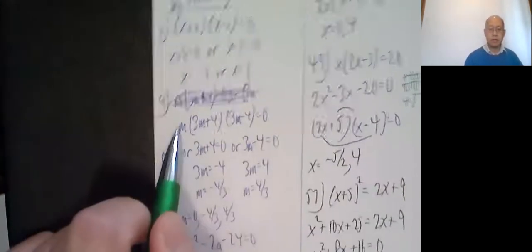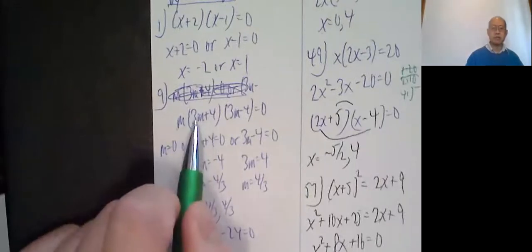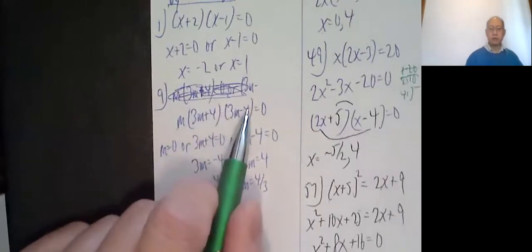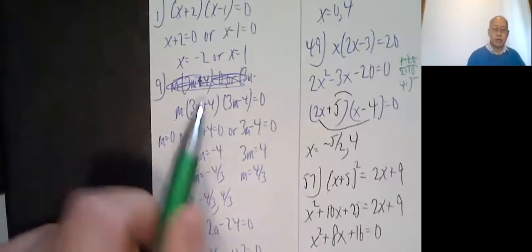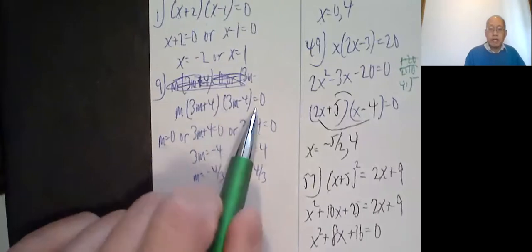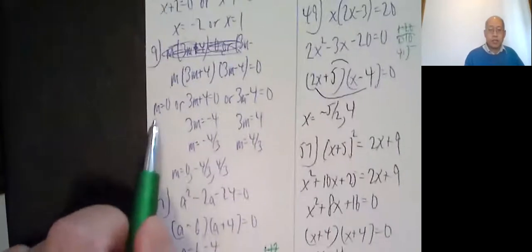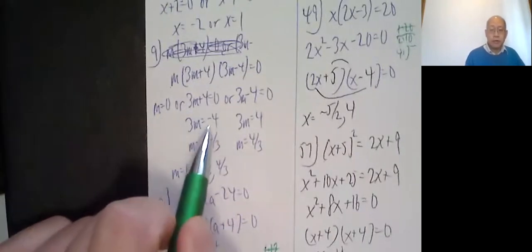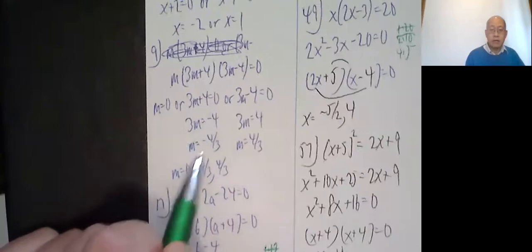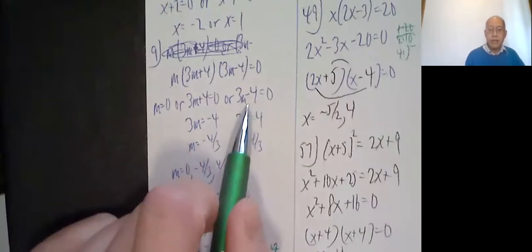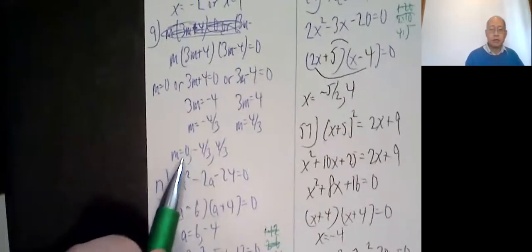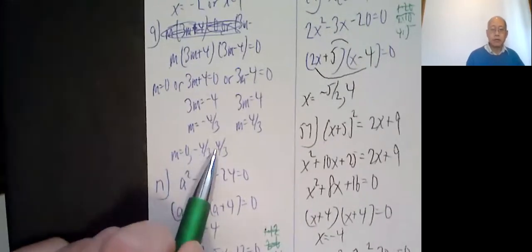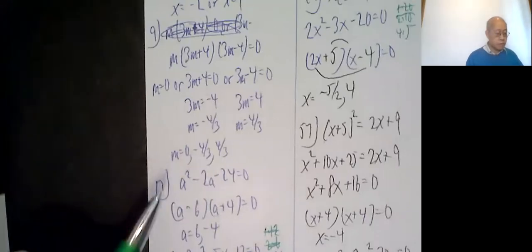Number nine: m times 3m plus four times 3m minus four equals zero. So that means either m is zero, which is finished, or 3m plus four equals zero, or 3m minus four equals zero. This one subtract four, divide three, m equals negative four thirds. Add four, divide three, m equals four thirds. So my three solutions are zero, negative four thirds, and four thirds.